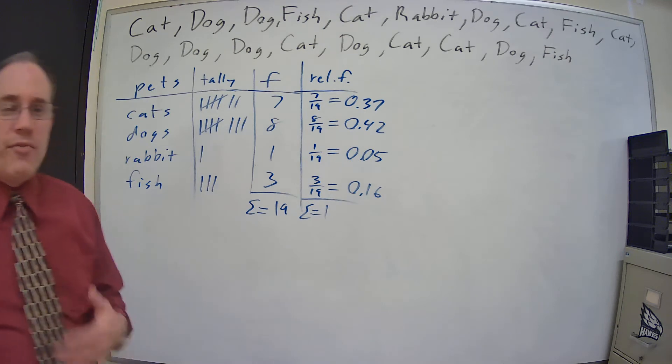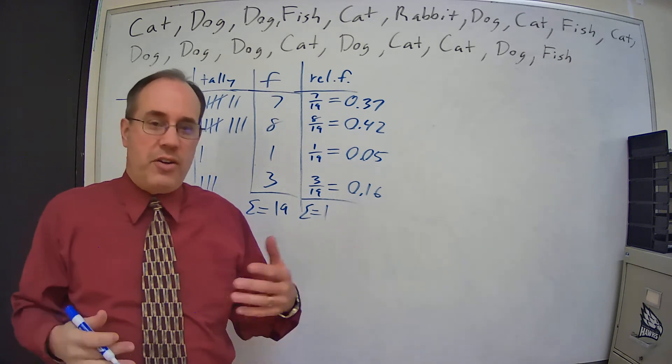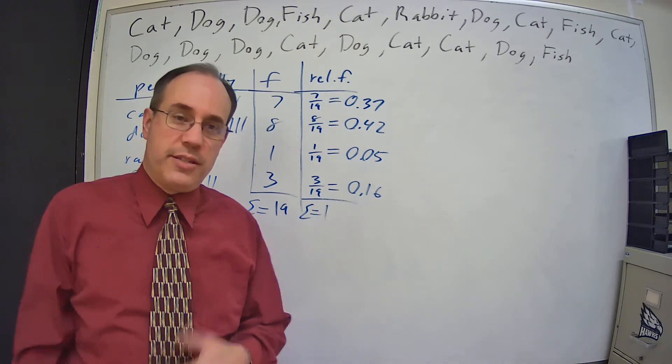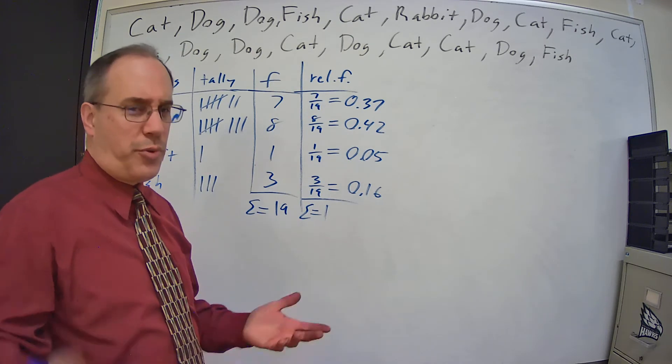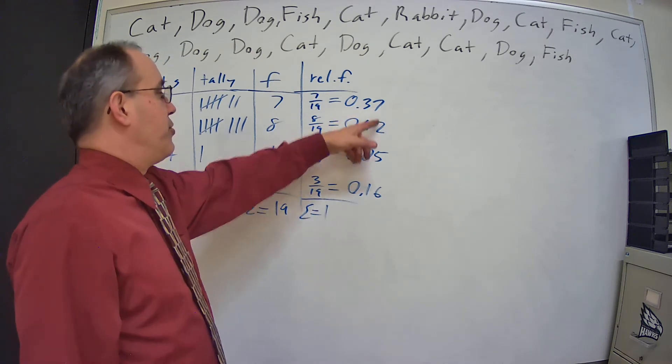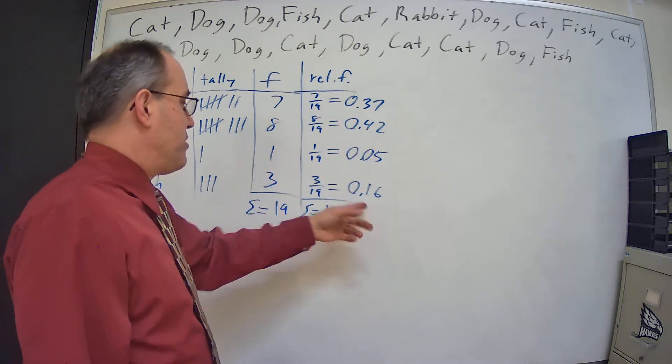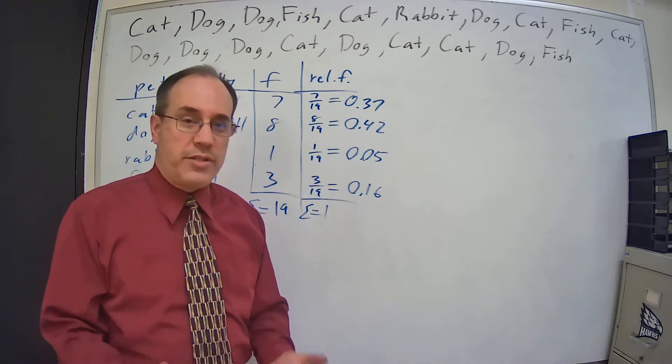And remember, whenever we're dealing with decimals, I'm a fan of just doing two decimal places. I'm perfectly happy with that. There's only one point in the course where I ask you for more than that. So two decimal places is great. We add these up, and that actually comes out to 1.00.